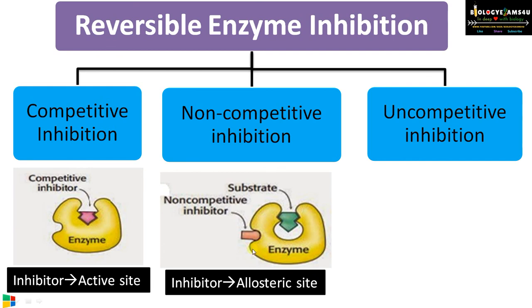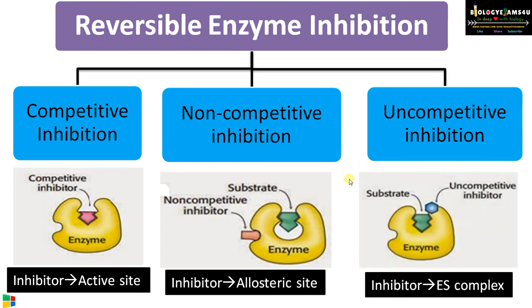In the case of non-competitive inhibition, the inhibitor binds to the allosteric site — a site other than the active site. Binding at this allosteric site causes a conformational change in the active site, causing inhibition. That is why it is called non-competitive inhibition; it is not competing with the substrate for the active site. The third type is uncompetitive inhibition, where the inhibitor binds to the enzyme-substrate complex, so there is no interference with the substrate binding to the active site.